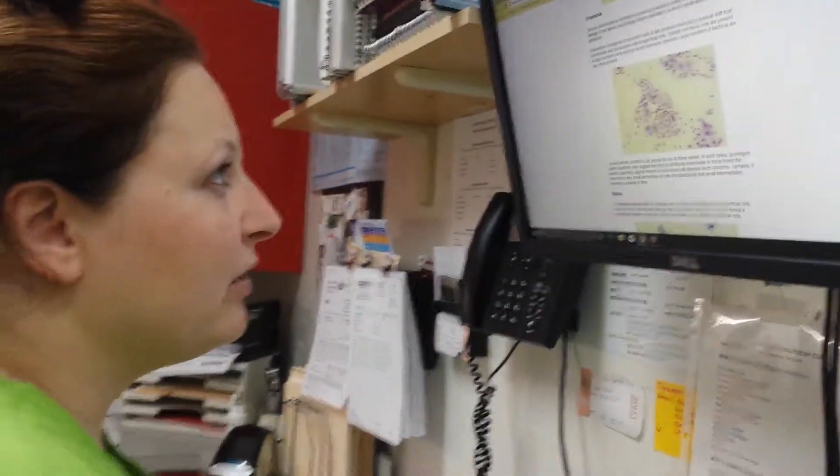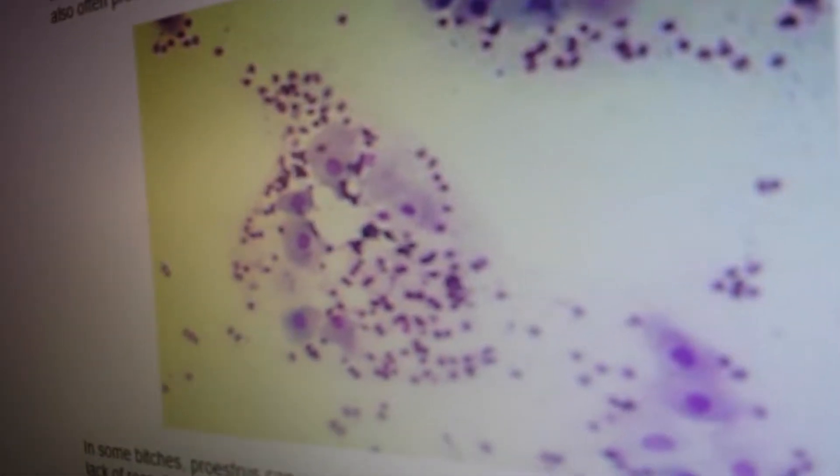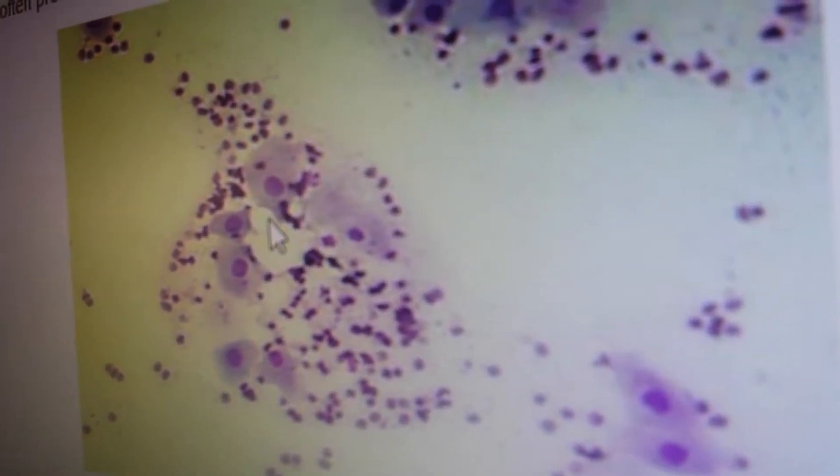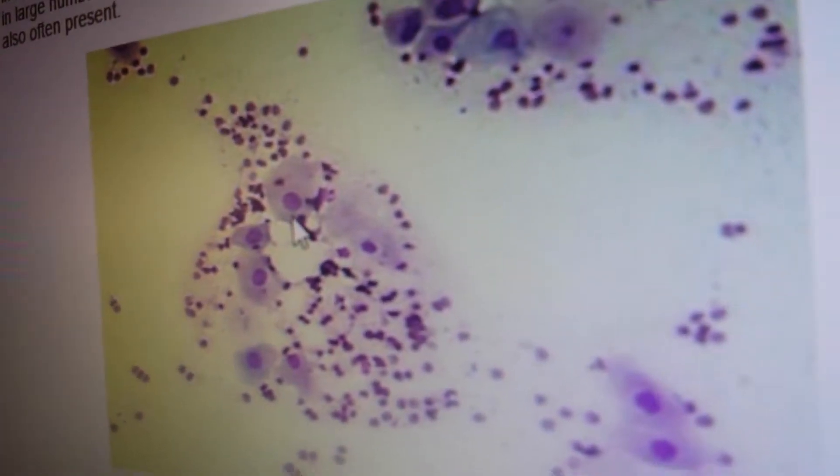The proestrus is when you would really start to notice with the patient that they have some drainage, possibly a little bit of bleeding. So as you can see there's different cell types in here. You're going to see a lot of red blood cells and lots of large neutrophils as well.